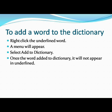How to add a word to the dictionary: right-click the underlined word, a menu will appear, select 'Add to Dictionary.' Once the word is added to the dictionary, it will no longer appear as underlined.